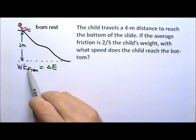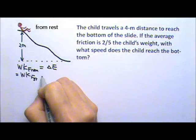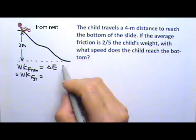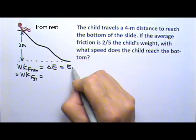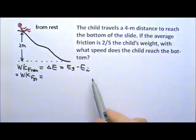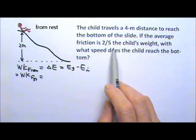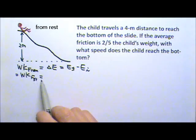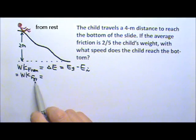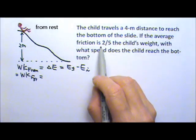The non-conservative force that's doing work is the friction. So this equals the change in total mechanical energy, which is the final minus the initial. In this case, the frictional force is 2 fifths the child's weight. So we'll have to relate this work energy theorem to the work equation so we can use the force.